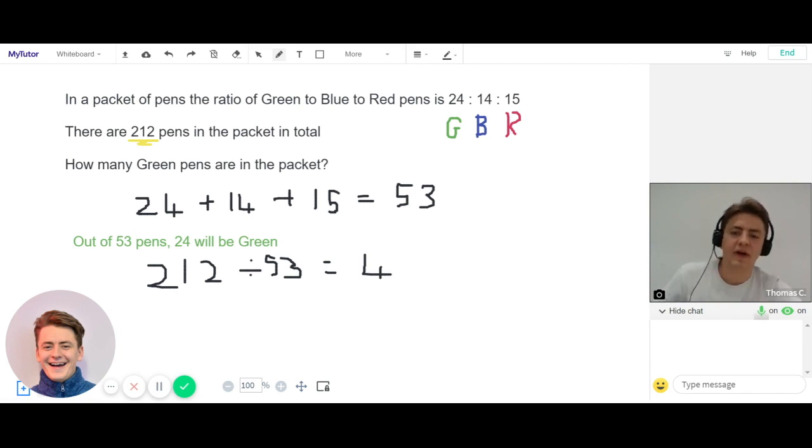So if out of every 53 pens, 24 are green, then to find out of 212 pens how many will be green, we just need to multiply 24 by 4. So 24, the number of green pens if we have 53 pens, times by 4, which is the multiplier to get from 53 to 212. We realize that in total there are going to be 96 green pens.